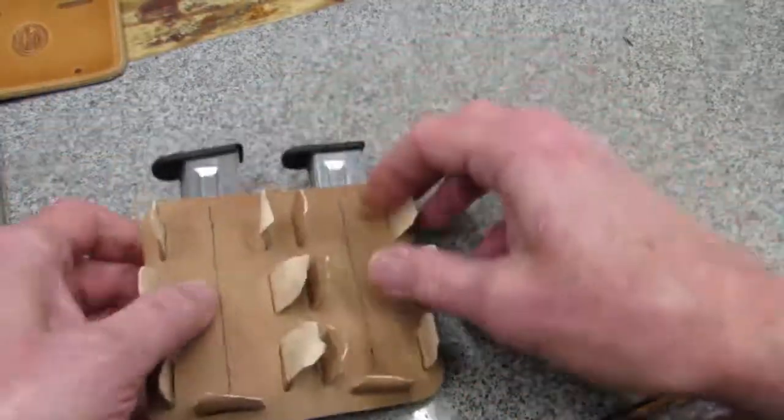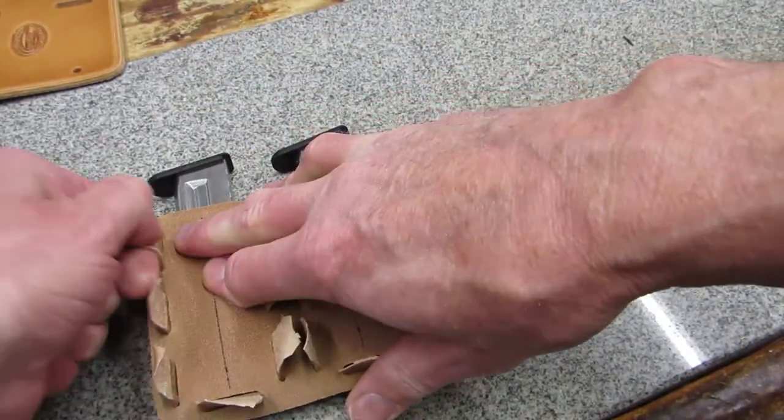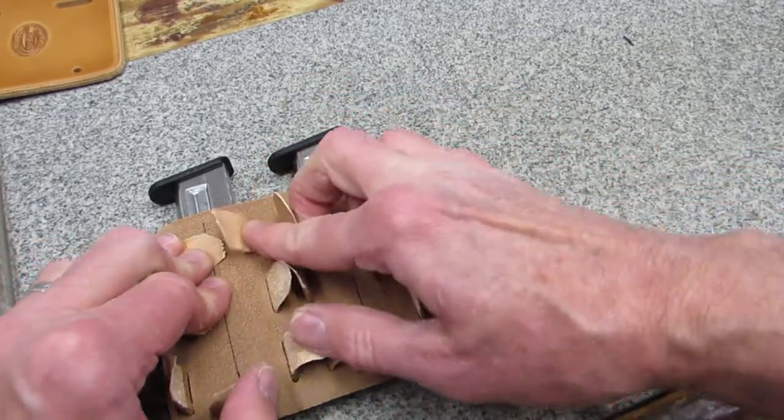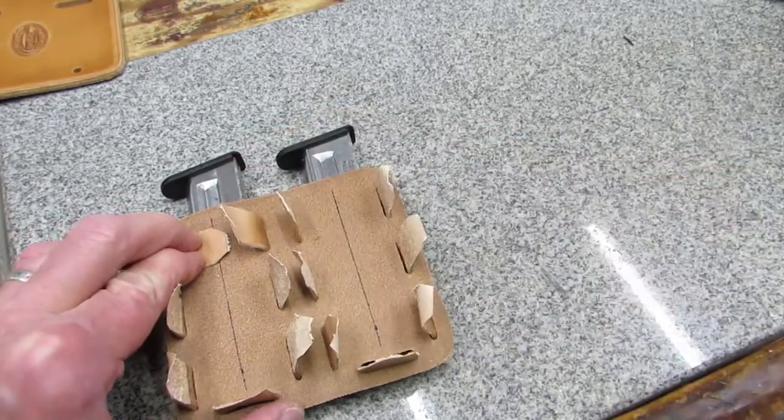Insert the magazines firmly into the mag pouches. Lay the assembly magazine down and pull the tabs tight. With the tabs pulled as tight as possible, lay each tab over the center line and mark them for length.